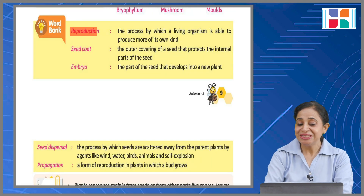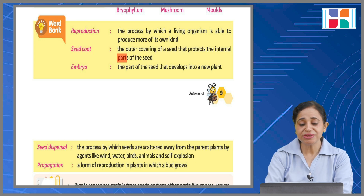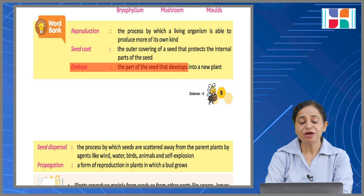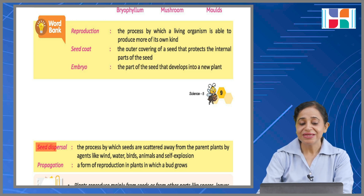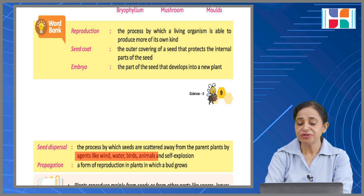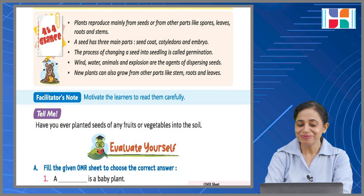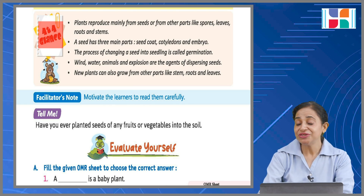Word bank: Reproduction — the process by which a living organism is able to produce more of its own kind. Seed coat — the outer covering of a seed that protects the internal parts of the seed. Embryo — the part of the seed that develops into a new plant. Seed dispersal — the process by which seeds are scattered away from the parent plant by agents like wind, water, birds, animals, and self-explosion. Propagation — a form of reproduction in plants in which a bud grows into a new plant.